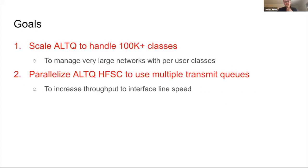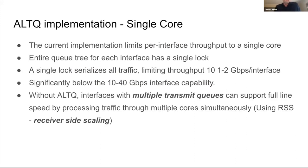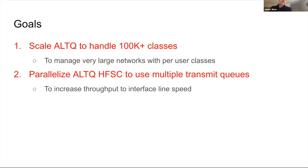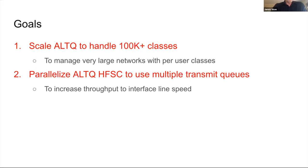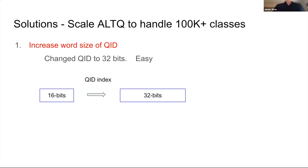I decided to look into whether that could be fixed. The other part of the problem: what if you want a system with lots and lots of users? What's the point of scaling to high throughput if you can't have many users? So I'm looking at how to scale Alt-Q to handle 100,000-plus simultaneous users or streams or user classes, and also whether we can get bandwidth up to match modern interface speeds.